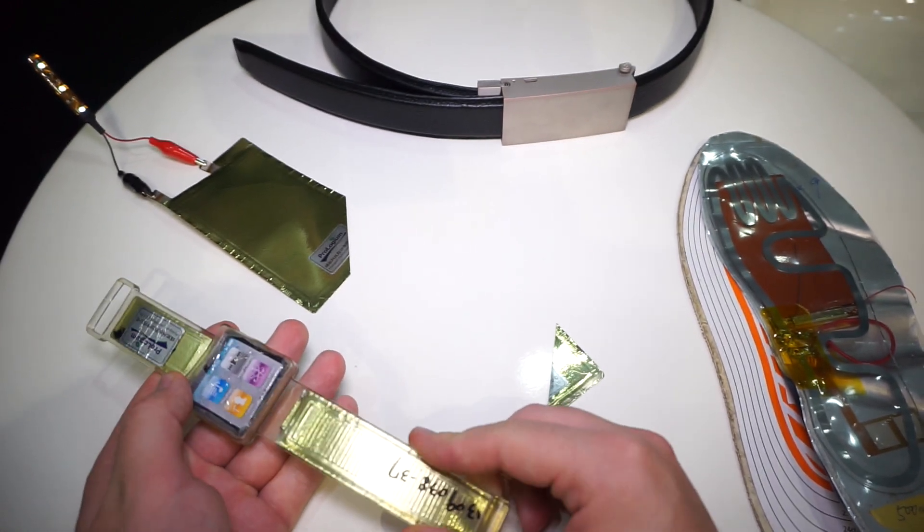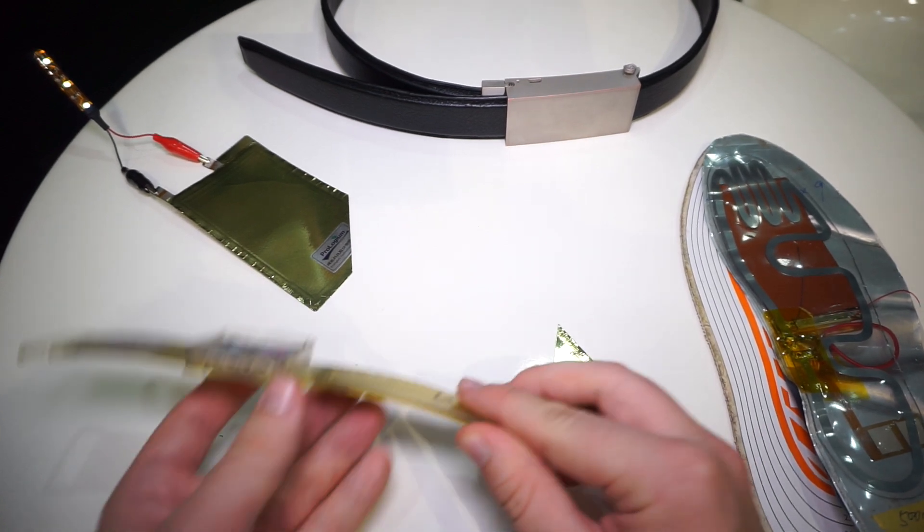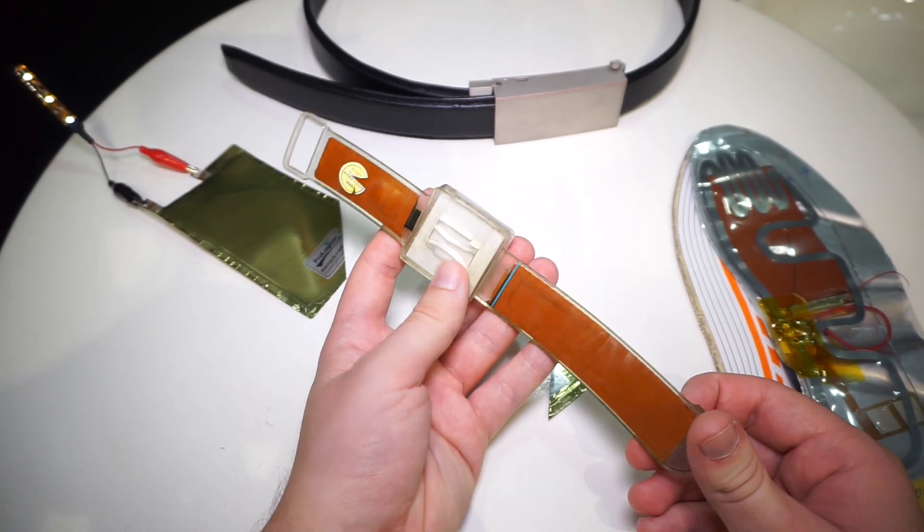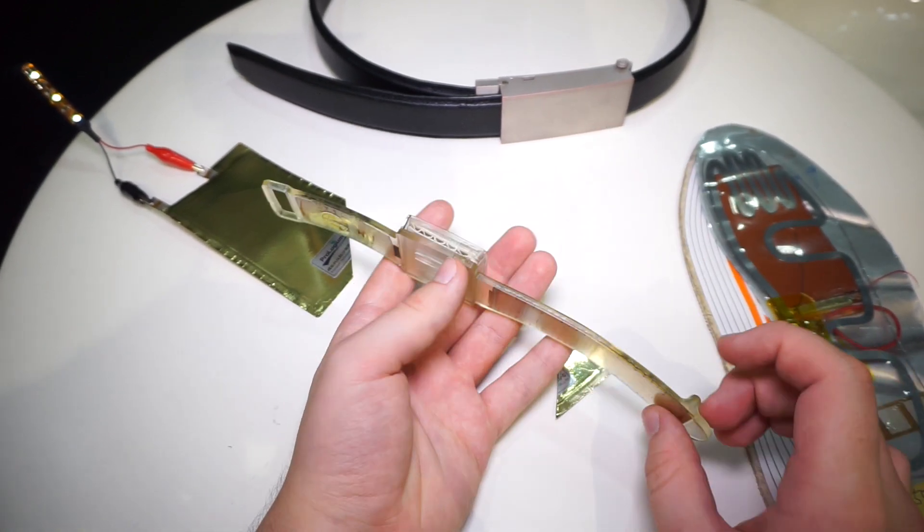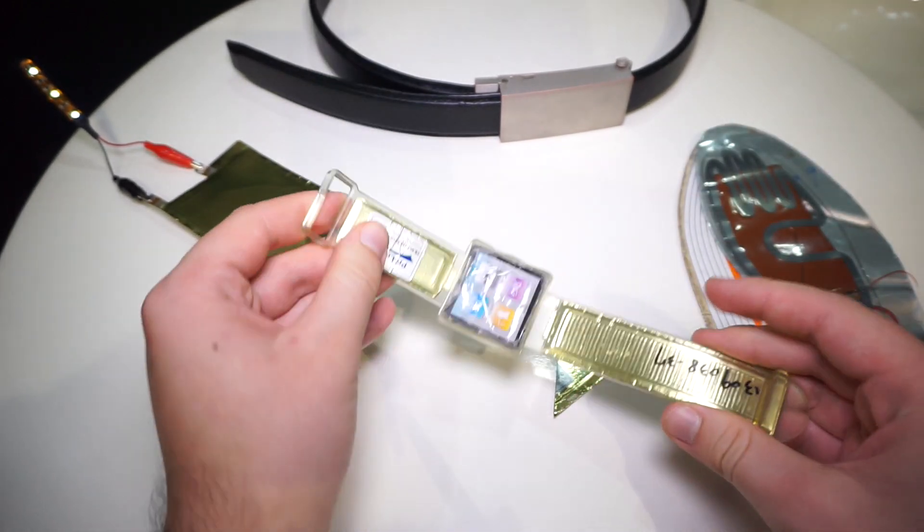The problem with smart devices is that they need a lot of battery life, but it's quite difficult to fit them inside. What Prologium shows here is a smartwatch prototype where the battery is actually inside the band. As you can see, it's totally flexible.